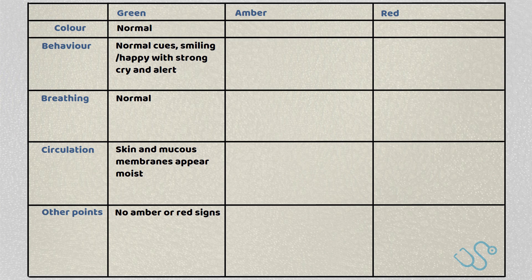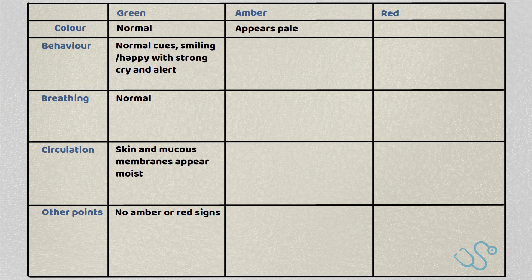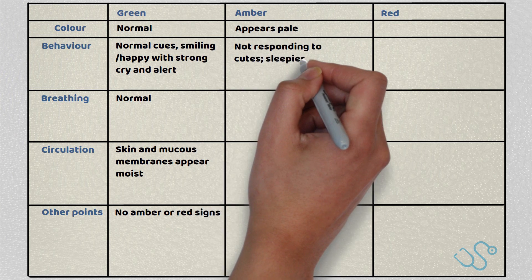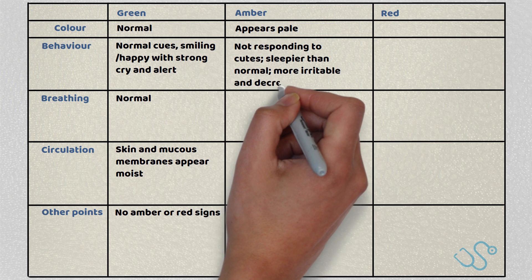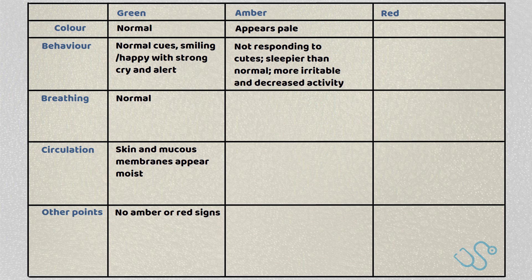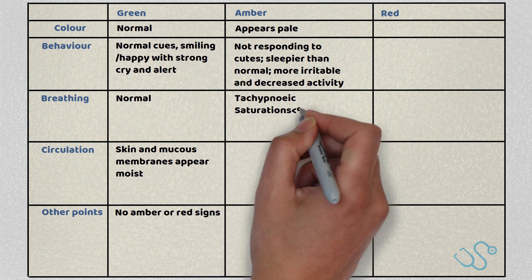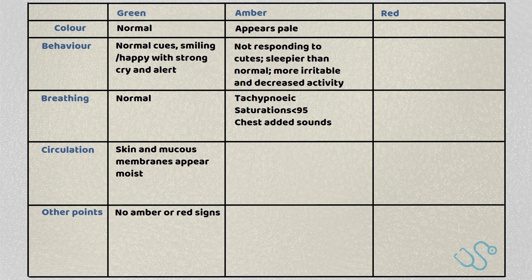A child who is amber would appear pale in colour. Their behaviour — they won't necessarily respond to normal cues, they might be a bit sleepier than normal, more irritable with decreased activity. With their breathing, they might be tachypnoeic with saturations less than 95% and the chest may have added sounds.